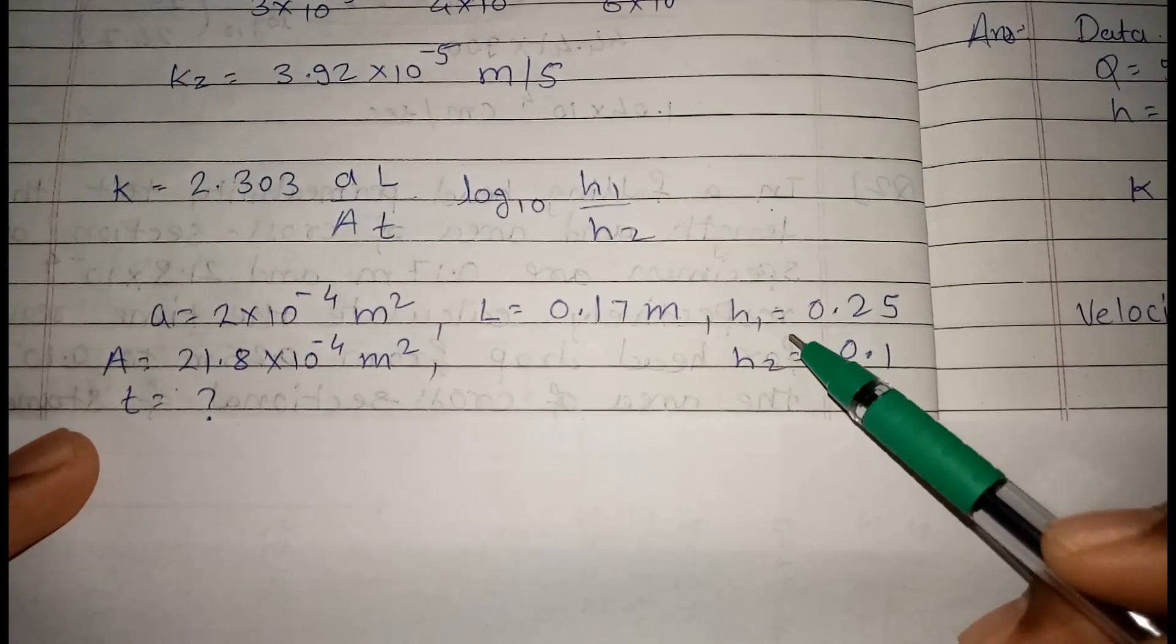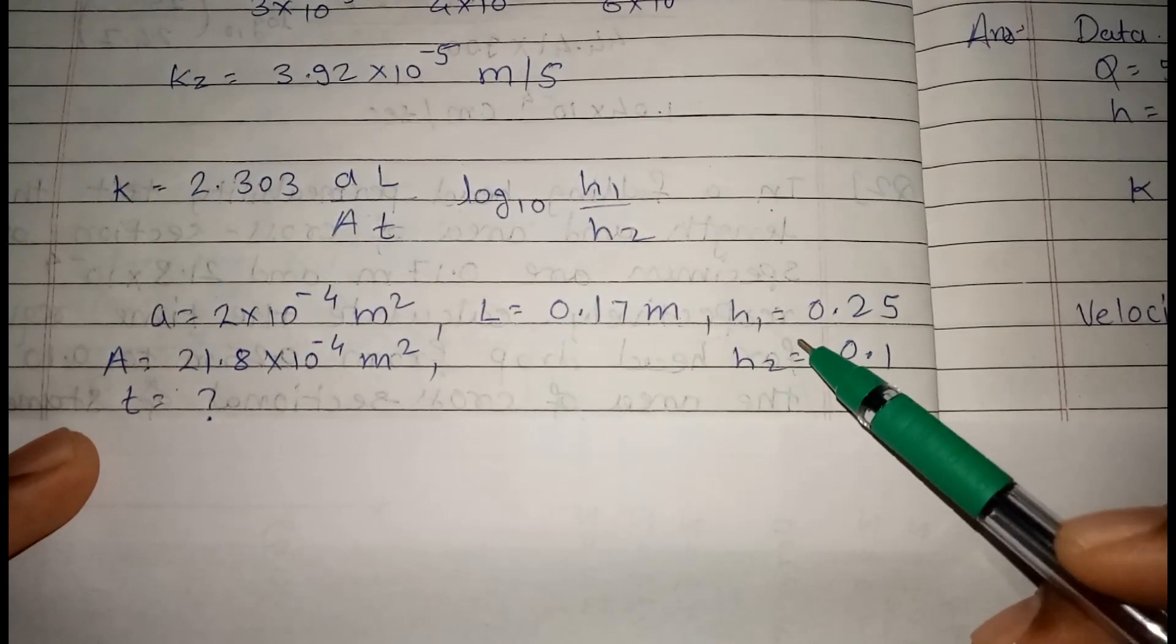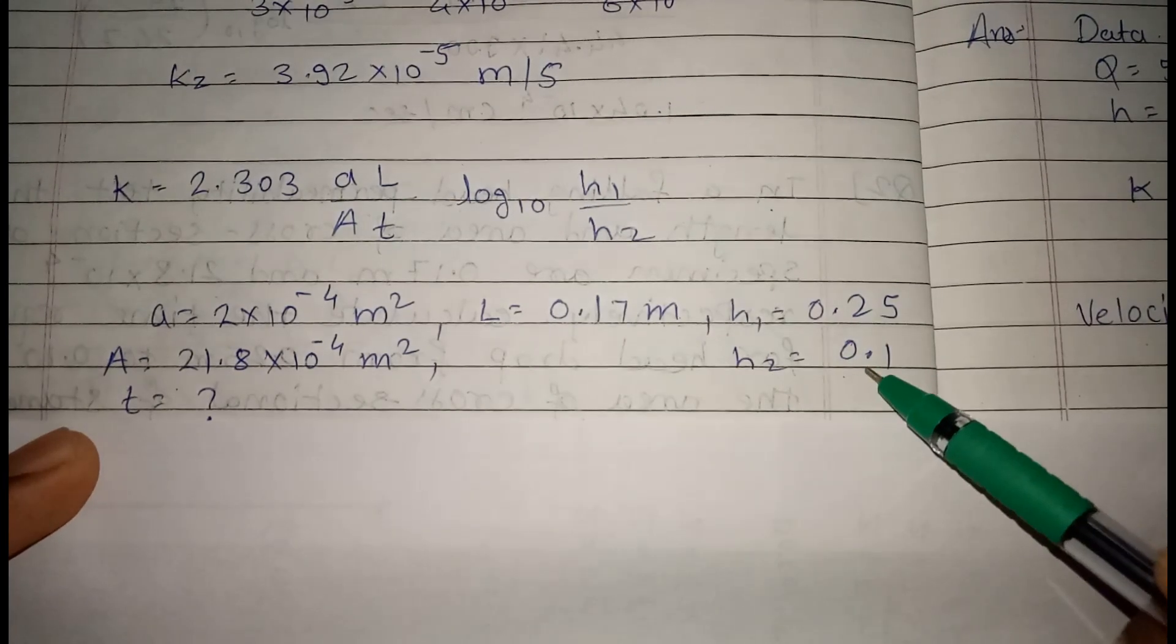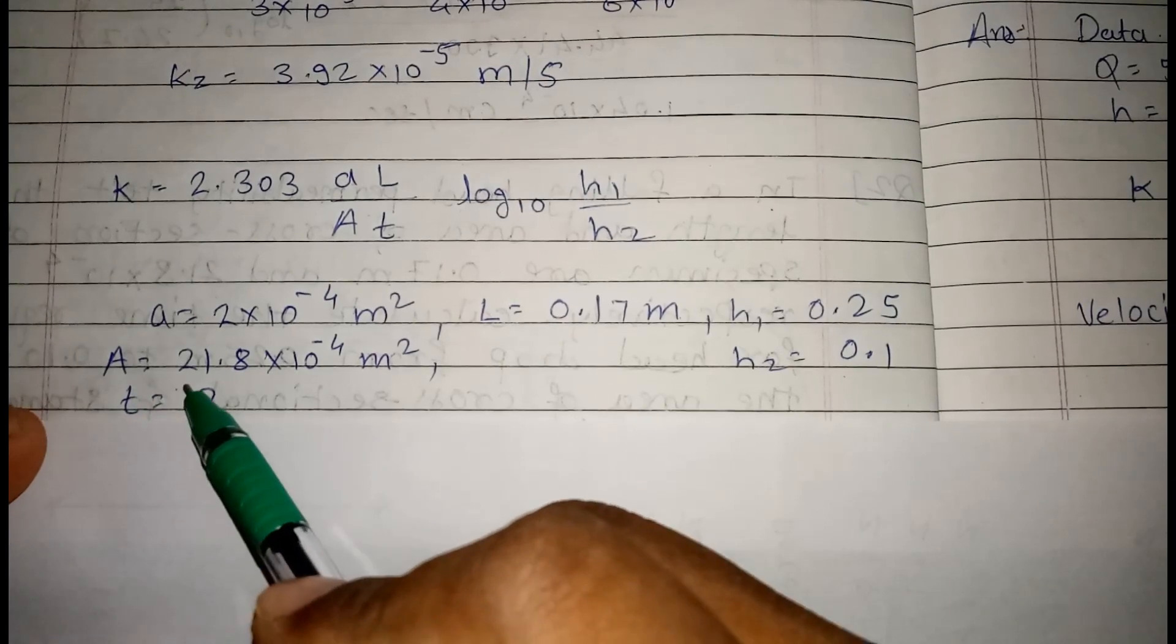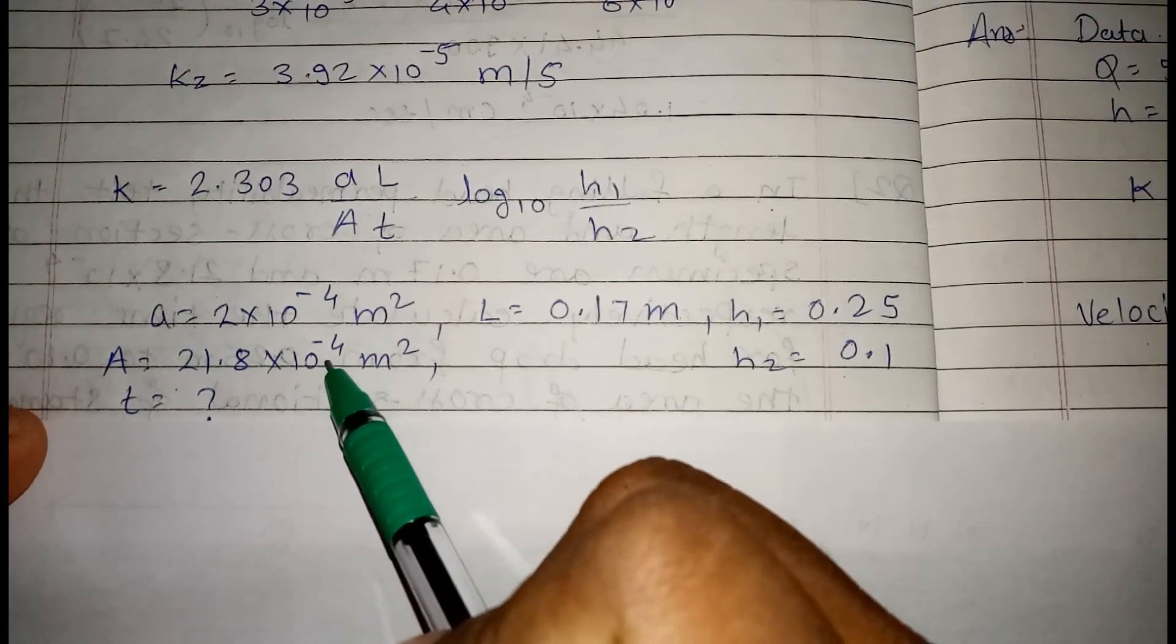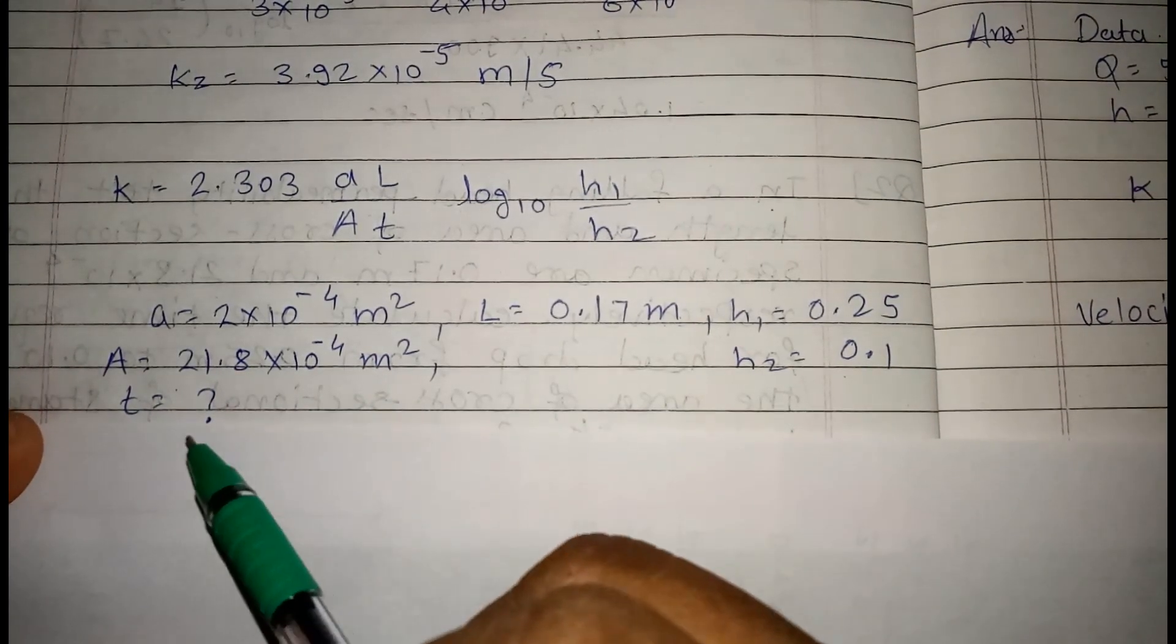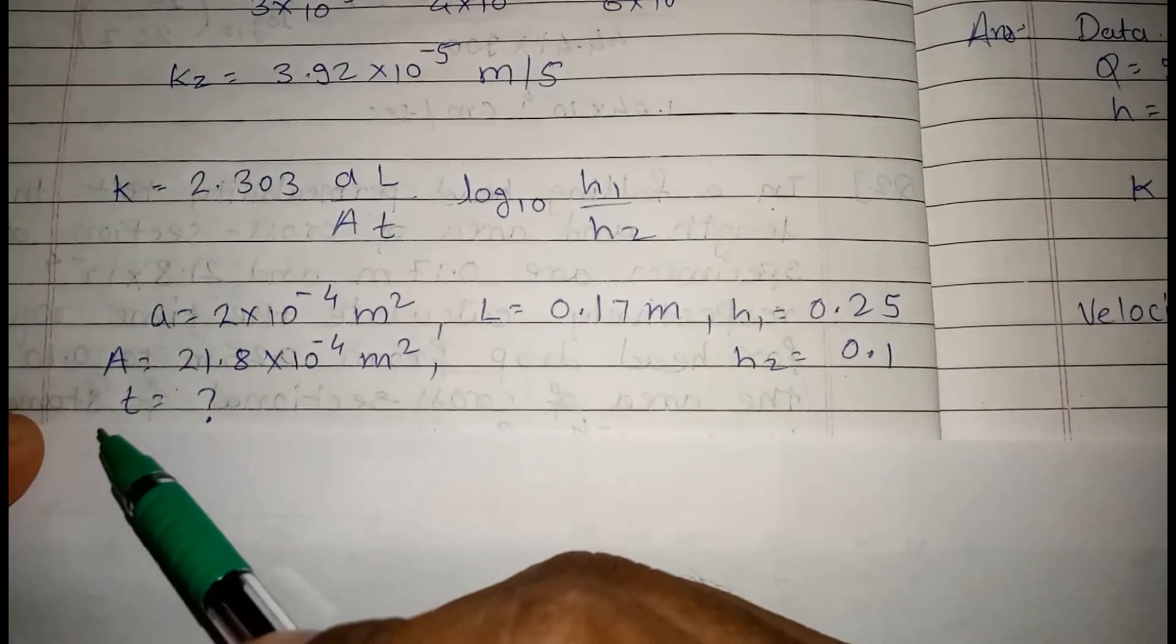H1 means the height of water. H1 is 0.25 and H2 is 0.1. Area, capital area of the soil sample is 21.8 into 10 raise to minus 4 meter square. Now, here we have to calculate the time.